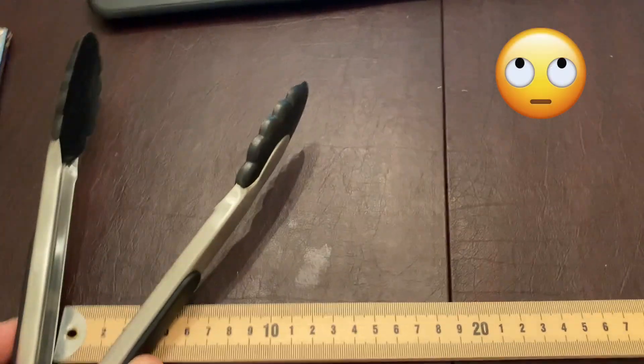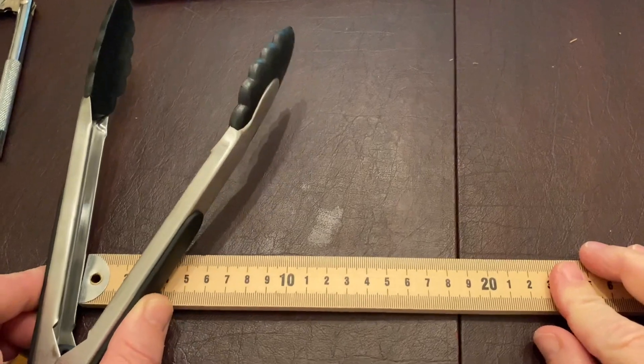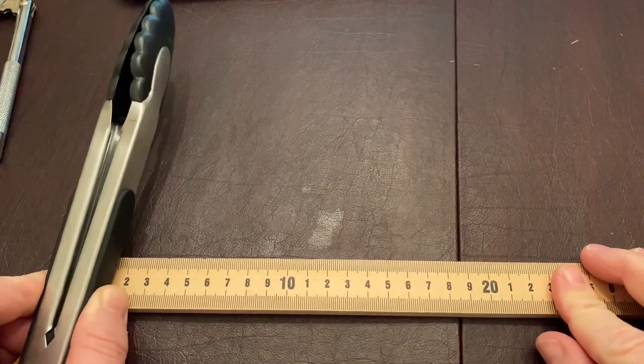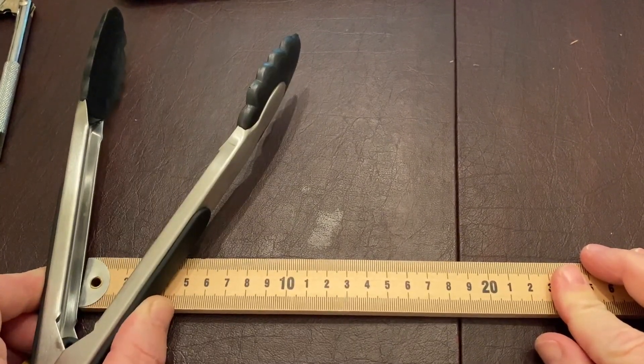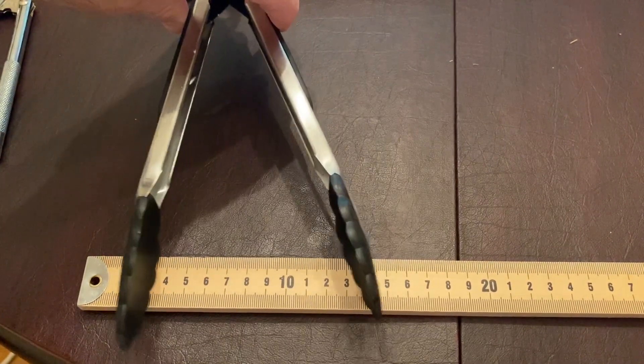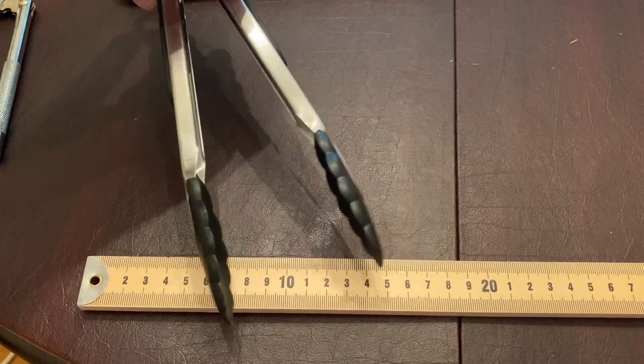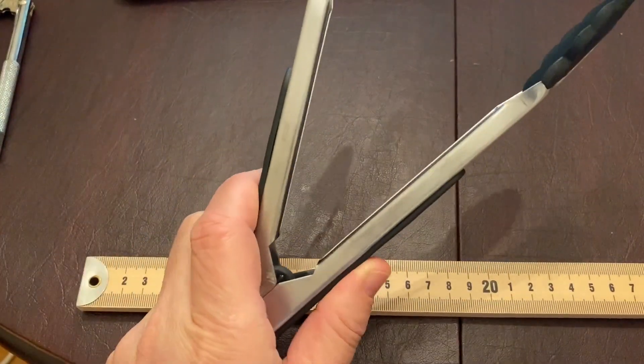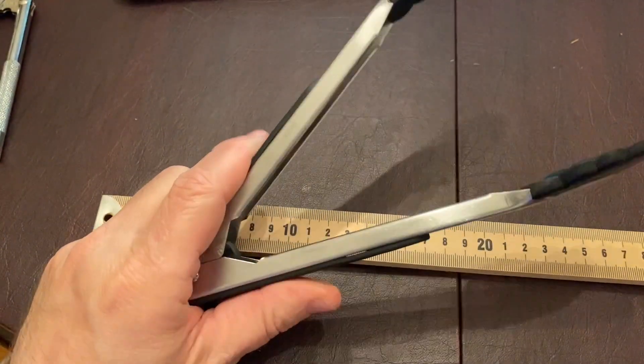If you look at where the handle goes, where your fingers are, I'm only closing that about four, four and a half centimeters. So this thing is increasing the distance that my fingers are moving, so it must be decreasing the force. So let's just see if I can crush something.